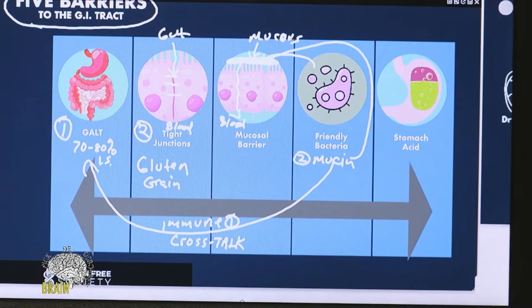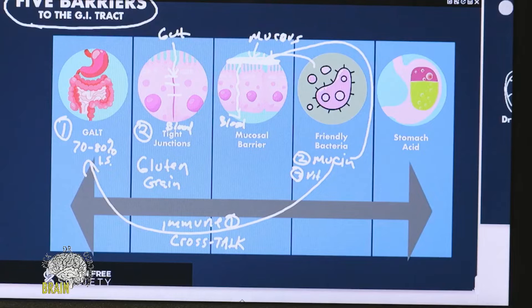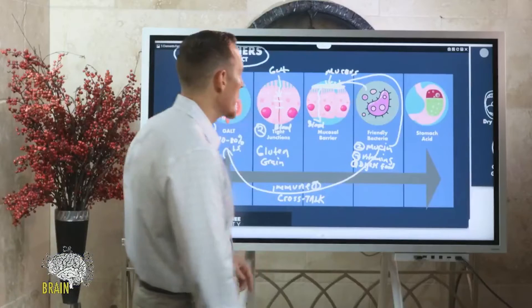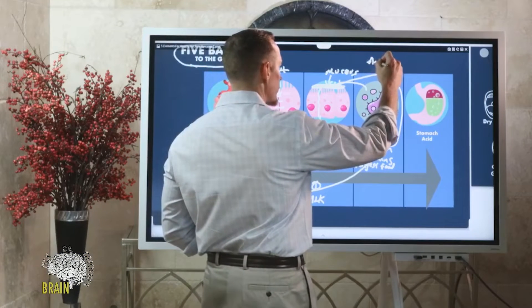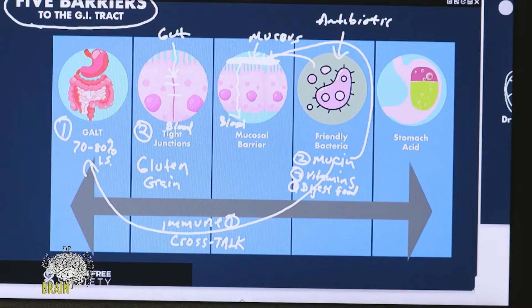Other functions of the good bacteria: they actually help produce mucin - that's their home, they produce what they live in, which helps with that mucus barrier. A third function, they make or help you make vitamins. Number four, they help you digest your food. We want these bacteria there. An easy way to destroy the gut lining and compromise it is to wipe out your friendly bacteria. Antibiotics do that.